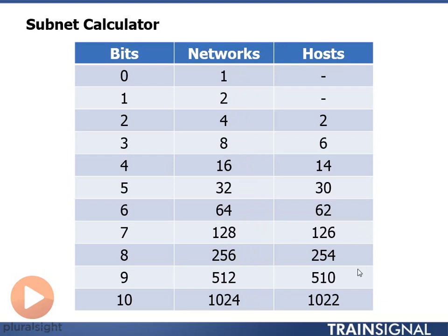Last, in the hosts column, all we're going to do is subtract two from the network column value. So one minus two is negative one — that doesn't count. Two minus two is zero — again doesn't count. Four minus two is two, eight minus two is six, 16 minus two is 14, and so on.